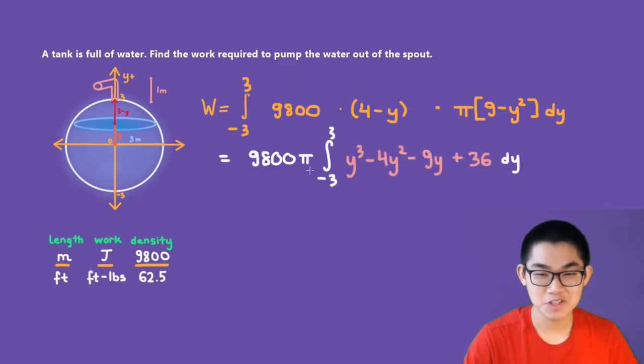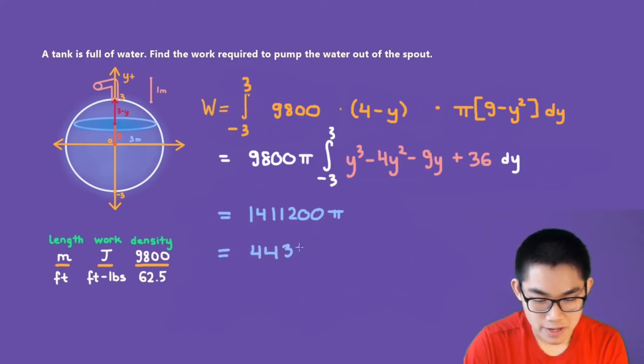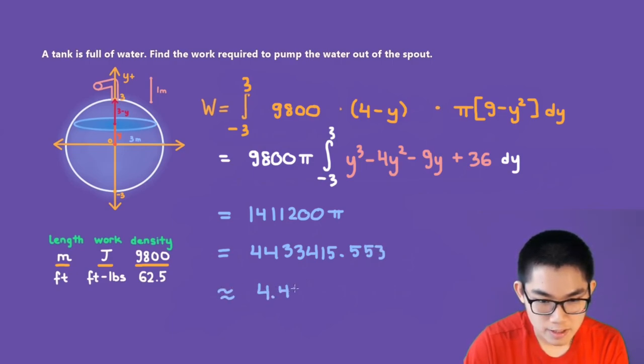Let me save you the trouble of going through this integral. After I went through this integral, I get 1,411,200 pi. This is the same as 4,433,415.553, which is approximately 4.43 times 10 to the power of six joules.